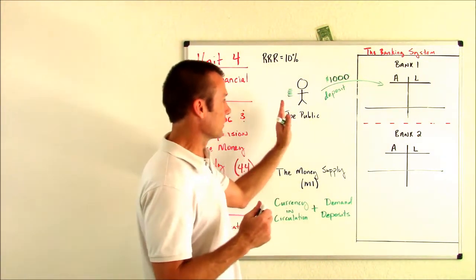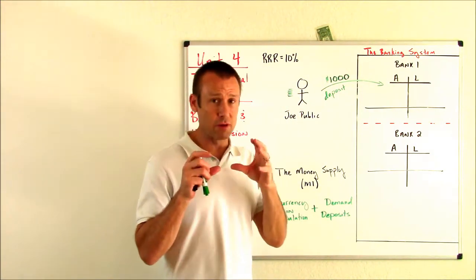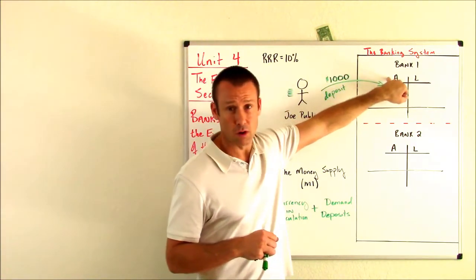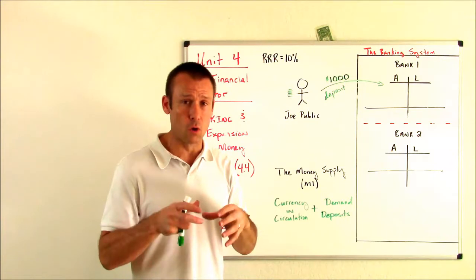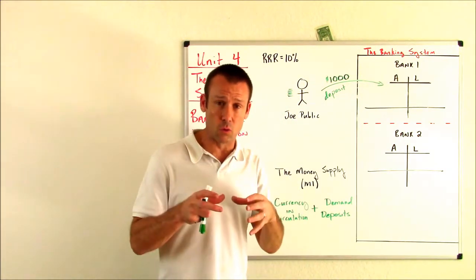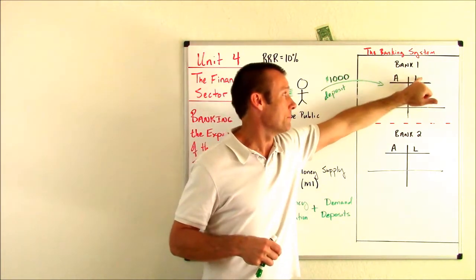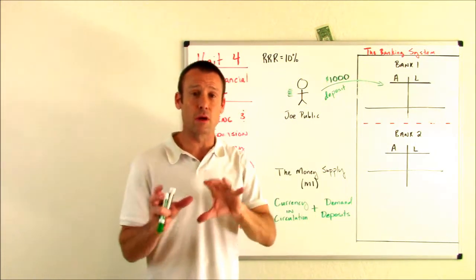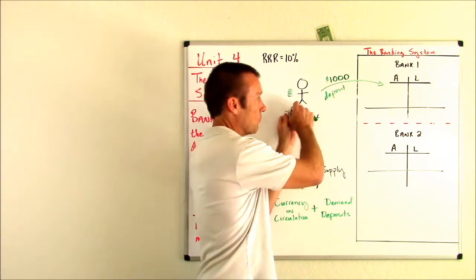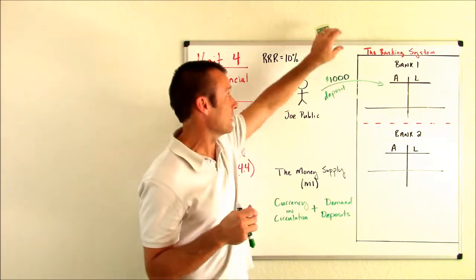So let's take a look at this. Joe makes a deposit into bank one. Now, before I record this deposit, I want to go over a few things. Assets, what are they? These are things that we own or are owed to us. So bank one assets are things bank one owns or things that are owed to bank one. Liabilities, that's our debt. That's what we owe to others.